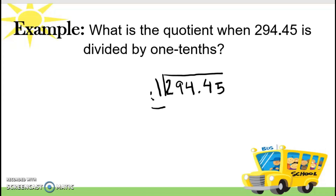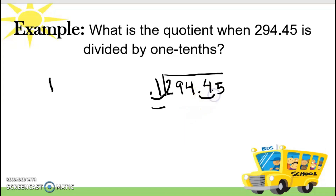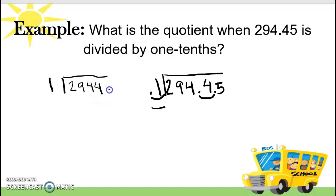Mumove natin from left to right. How many times? Once lang, kasi 1 lang naman yun eh — one place value lang. So kaya magiging 1. Magiging 1 lang siya. Andito na yung decimal point niya. So kung anong ginawa natin sa labas, gawin din sa loob. Once also — we're going to move this once. So mapupunta na dito yung decimal point niya. So kaya magiging, ano na yung number niya? 2,944 and 5 tenths.